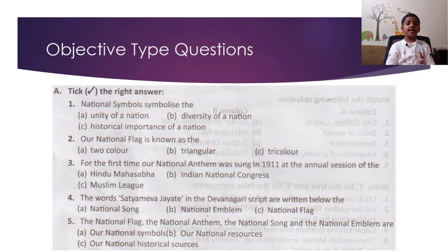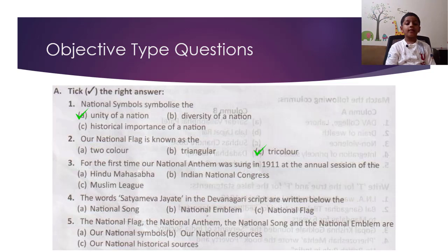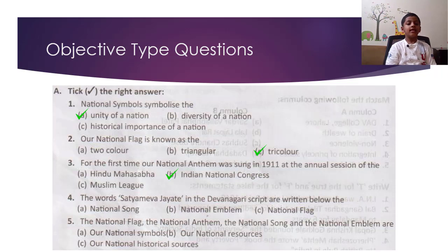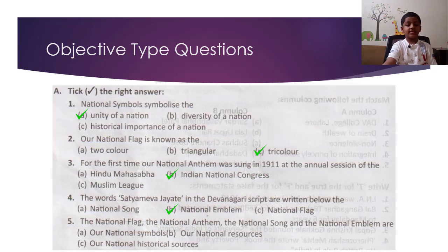Objective type questions. Section A: Tick the right answer. National Symbols symbolize the unity of a nation. Our national flag is known as the tricolour. For the first time, our national anthem was sung in 1911 at the annual session of the Indian National Congress. The words Satya Mewa Jayate in the Devanagari script are written below the national emblem. The national flag, the national anthem, the national song, and the national emblem are our national symbols.